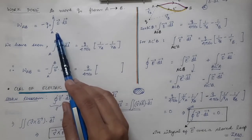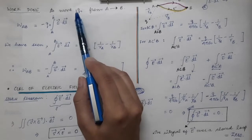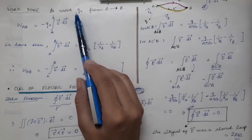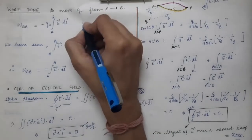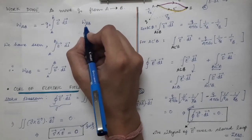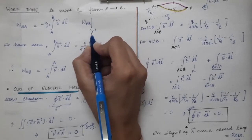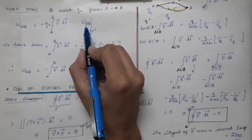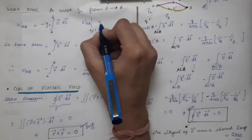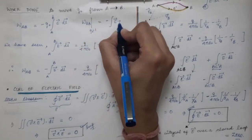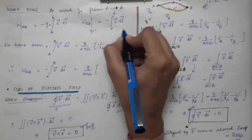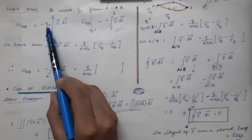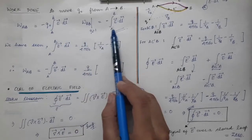Now, what is the work done to move a unit test charge? If we put Q₀ equal to 1, then for the case of a unit positive test charge, the work done to move it from A to B in the presence of the electric field equals simply negative of the line integral of electric field from A to B.